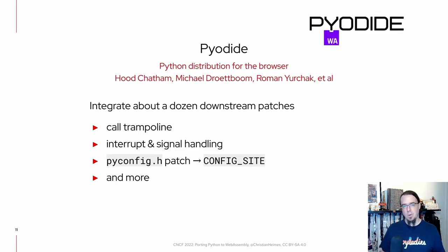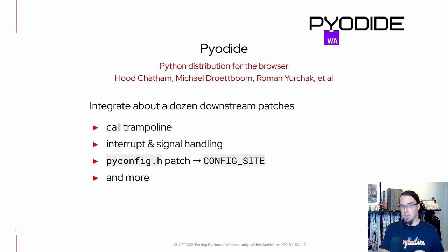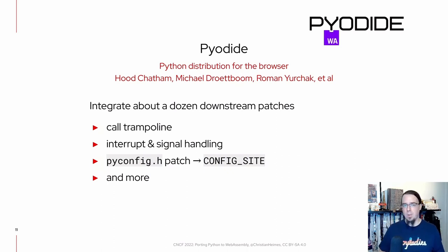While we were working on that, we were also collaborating with the Pyodide team. Pyodide is an existing, working, and stable distribution of Python for the web browser. They had everything figured out, but they also had to maintain lots of patches — about a dozen downstream patches to work around the same problems we were having. Slowly we migrated and upstreamed several of these patches into CPython or replaced them with better approaches. Instead of having hackish pyconfig.h patches, we used an autoconf feature called config.site.